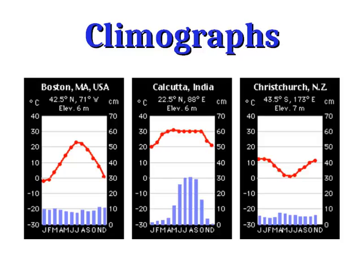Precipitation in Boston is pretty consistently about 10 centimeters every month. Looking at the climograph for Calcutta, India, temperatures are pretty consistent throughout the year at about 30 degrees Celsius with a little dip in winter. Precipitation in Calcutta has a striking seasonal difference, with very little precipitation in winter and a huge amount — up to 30 centimeters a month — in the middle of summer.